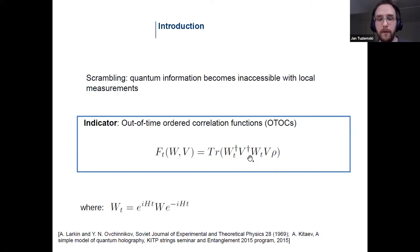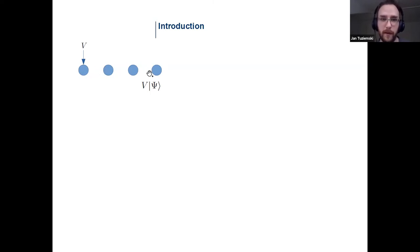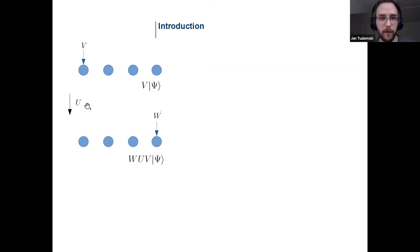Let me provide some intuition about what this quantity tells you. Consider a chain of qubits, with the state of all qubits as psi. Apply operator V to the first qubit, so V acts non-trivially only on the first qubit and does not affect the others. Then evolve this state according to unitary evolution and apply W to the last qubit of the chain, preparing a new state.